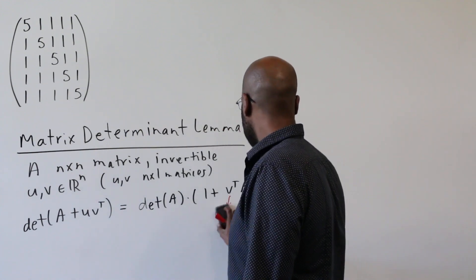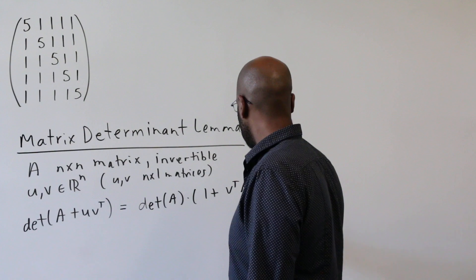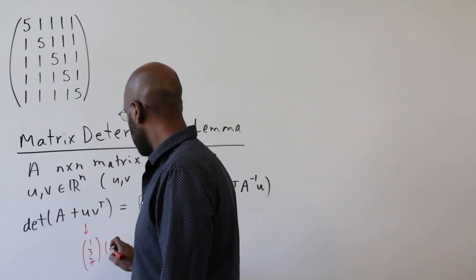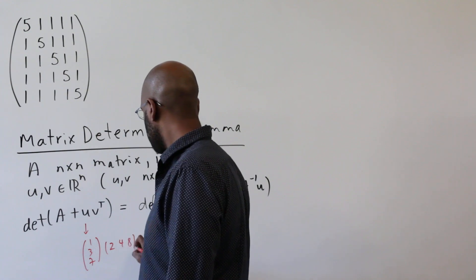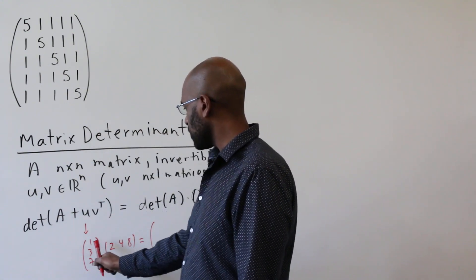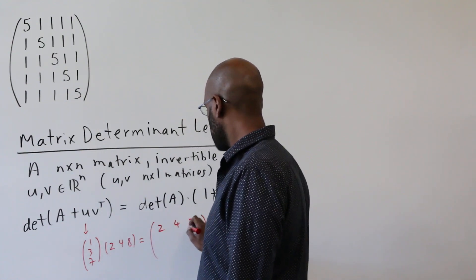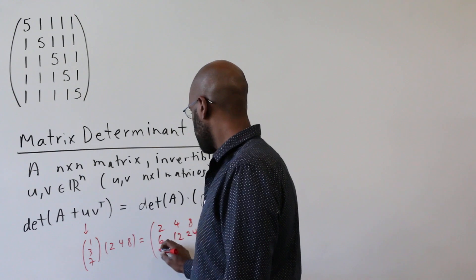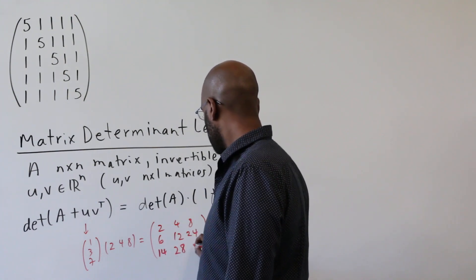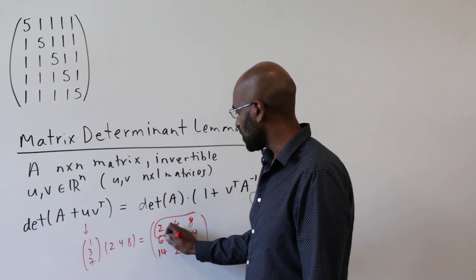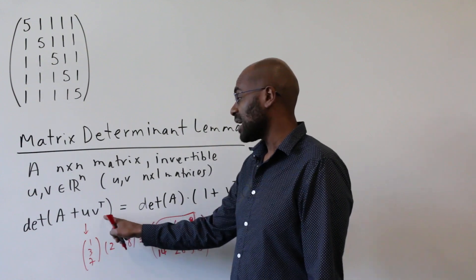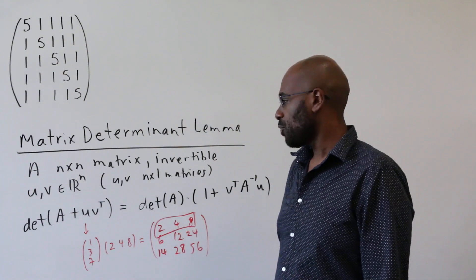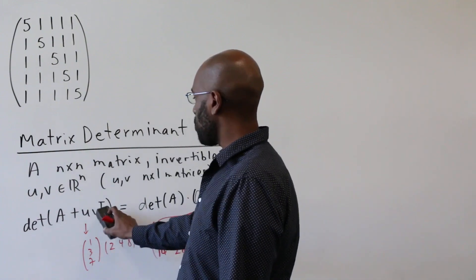Let's make some comments. First, v^T is 1 by n, A⁻¹ is n by n, and u is n by 1, so the product v^T · A⁻¹ · u is a 1 by 1 matrix — a scalar. Secondly, let's think about the nature of the rank-one update u·v^T. For example, if u = [1, 3, 7]^T and v = [2, 4, 8]^T, then the rows of u·v^T are all multiples of v^T, so this matrix has rank 1. That's why we call this a rank-one update to the matrix A.